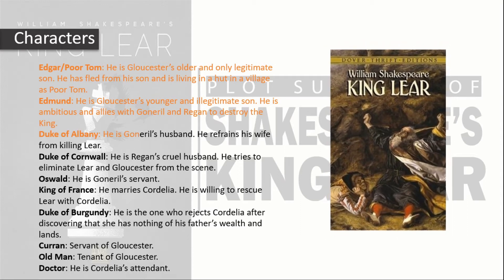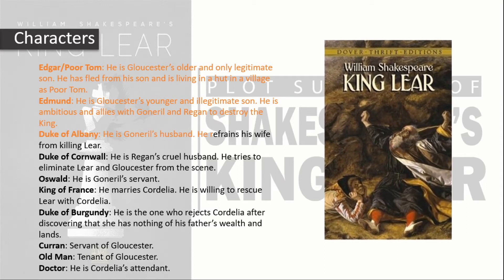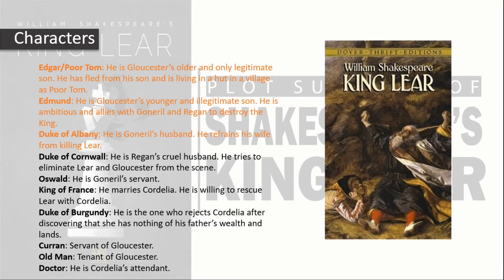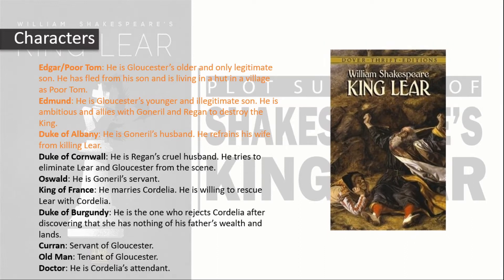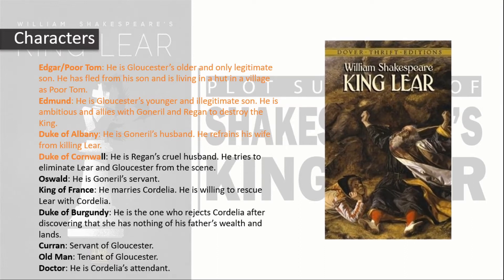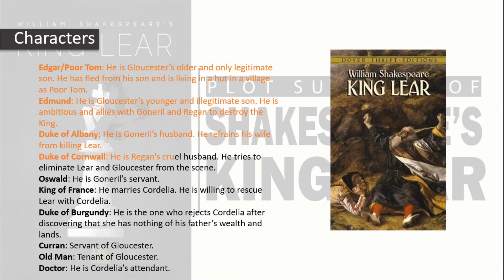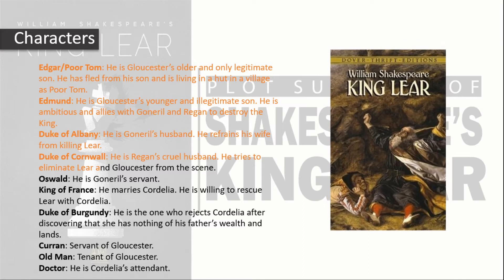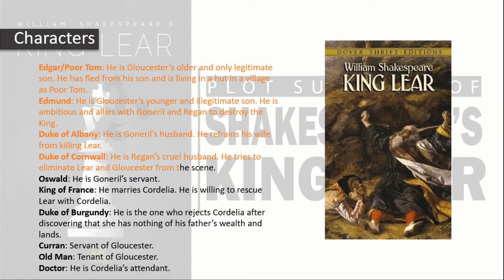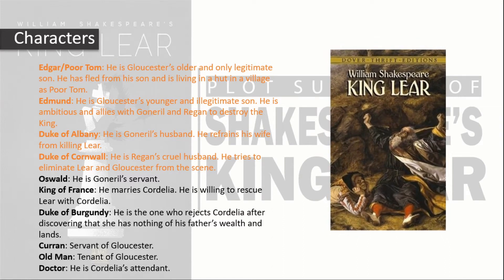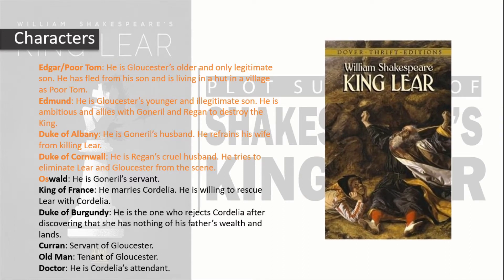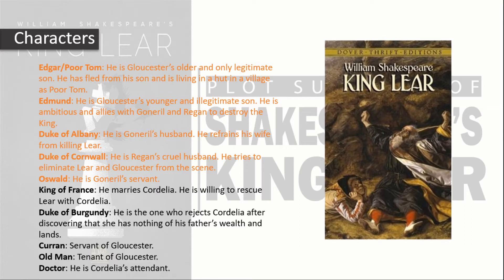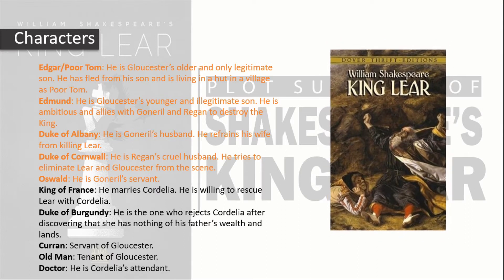The Duke of Albany is Goneril's husband. He refrains his wife from killing Lear. The Duke of Cornwall is Regan's cruel husband who tries to eliminate Lear and Gloucester from the scene. Oswald is Goneril's servant.